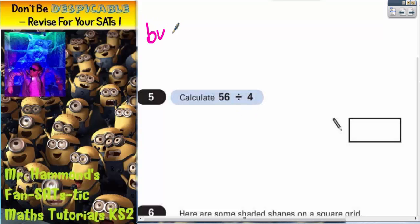Method number 1, which is the most efficient way, is called the bus shelter. And we set it up like this. The number you're dividing by goes in front of the bus shelter. The number that you're actually dividing goes inside the bus shelter.